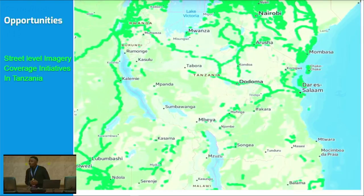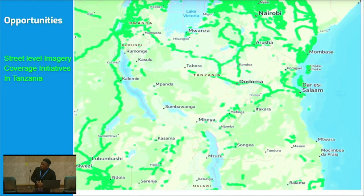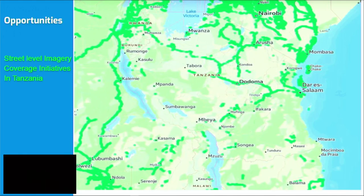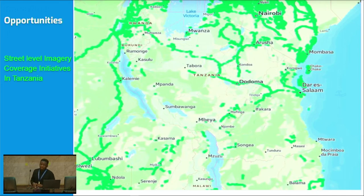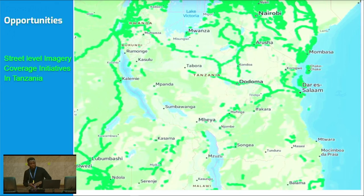So far, we are in contact with Mapillary, where they have provided us another GoPro Max camera which we expect to receive by next week. This is the map of Tanzania showing the mapping initiative we have been conducting. As you can see, only Dar es Salaam and a small part of Zanzibar have been mapped, but the rest is not mapped — these areas need to be updated and mapped so as to increase the value of OSM data.